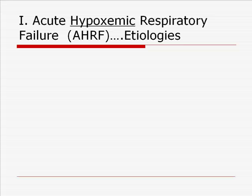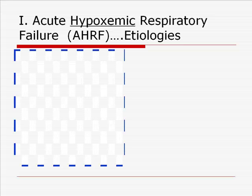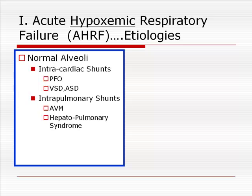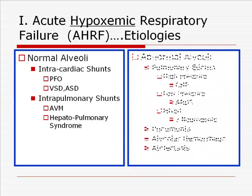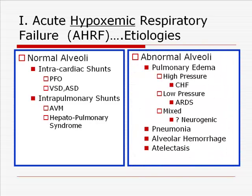With acute hypoxemic respiratory failure, there are a number of etiologies which can be broken down into those diseases associated with normal alveoli and those associated with abnormal alveoli.